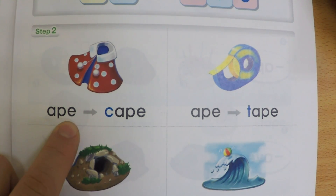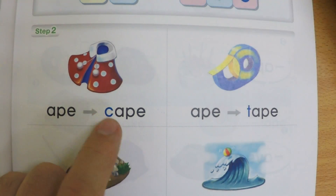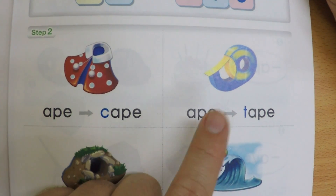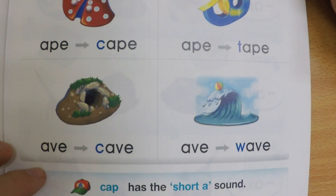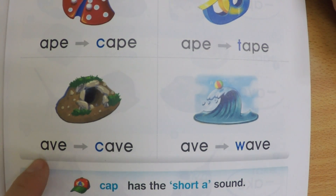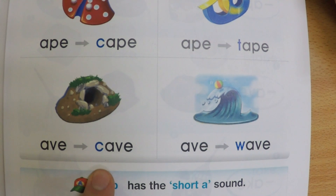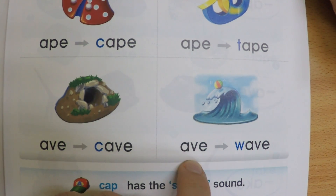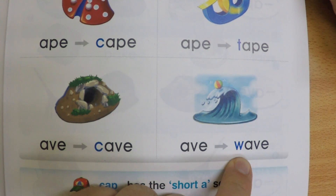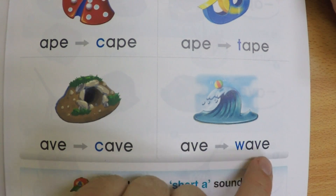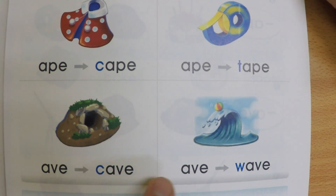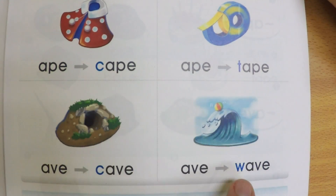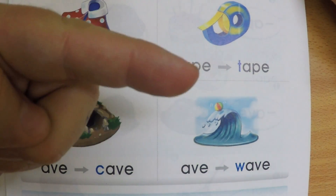Let's practice. APE — cape. Good job. How about this? Tape. Very good. And try the other two: cave. Great. And wave. Cape, tape, cave, wave — long A.